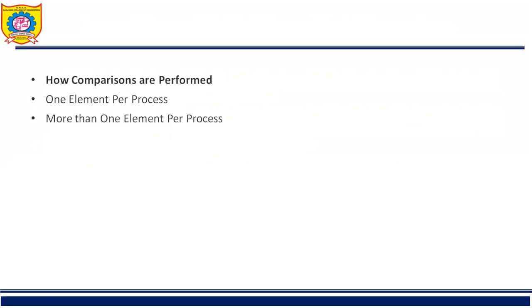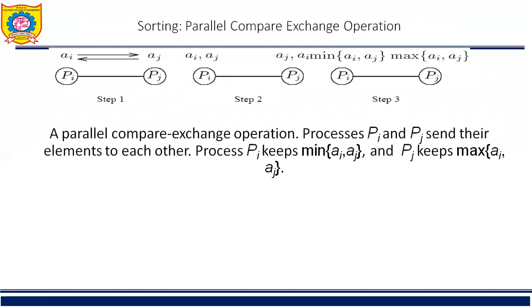Each compare and exchange operation requires one comparison step and one communication step. We assume that processes PI and PJ are neighbors and the communication channels are bidirectional. The communication cost of a compare and exchange step is TS + TW, where TS and TW are the message startup time and per-word transfer time respectively. In commercially available message passing computers, TS is significantly larger than TW, so the communication time is dominated by TS.